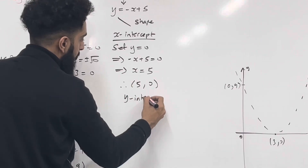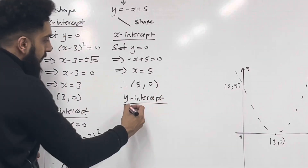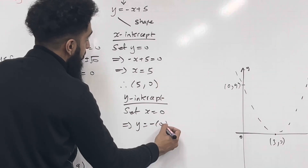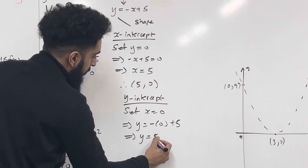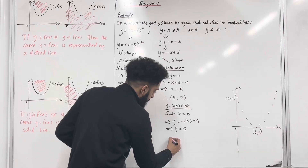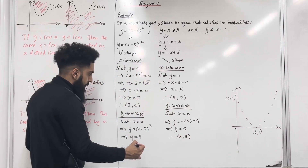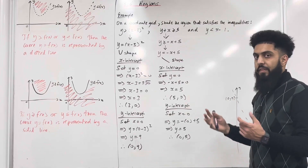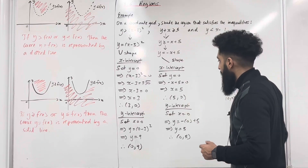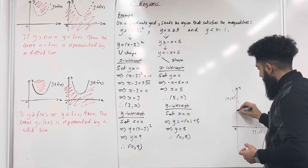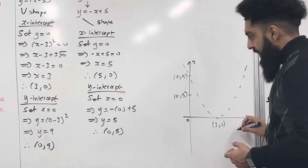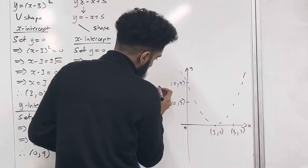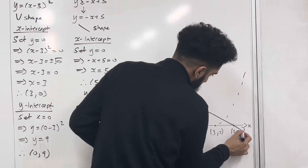Now I want to find the y-intercept. To find the y-intercept, I need to set x equal to 0. This implies that y is equal to minus 0 plus 5, which implies that y is equal to 5. Therefore the y-intercept will be 0, 5. Now, over here we have a greater than or equal to, so the graph y equal minus x plus 5 is represented by a solid line because we have an equal. The y-intercept is 0, 5 and the x-intercept is 5, 0 — so we have a solid line like that.